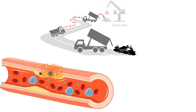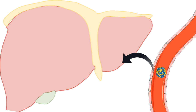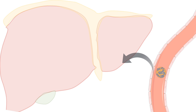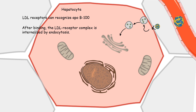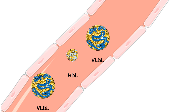Apart from depositing cholesterol peripherally, LDL would also be taken up by the liver. In liver hepatocytes there are specific receptors against Apo B100 — the LDL receptors — which recognize Apo B100 on the LDL particle. Ultimately the particle undergoes receptor-mediated endocytosis and is taken up by the liver hepatocytes to be recycled as per demand. The most important components here are Apo B100 and the receptor-mediated endocytosis mechanism.